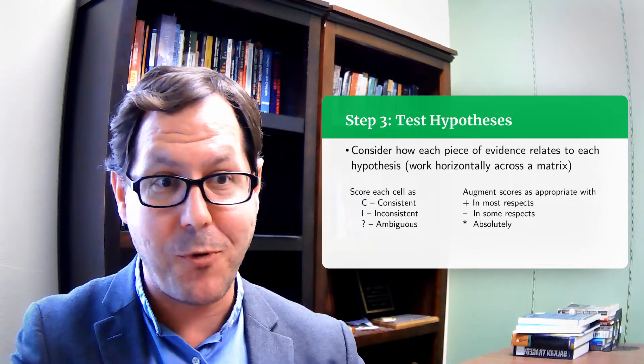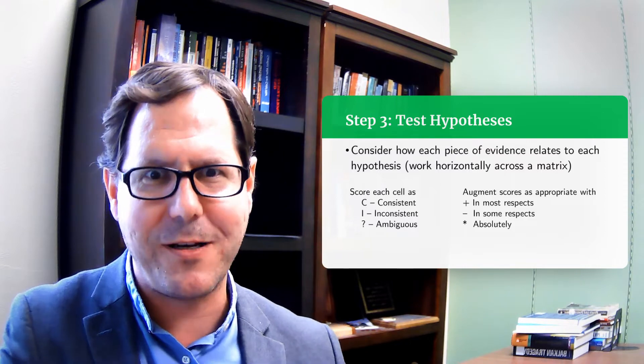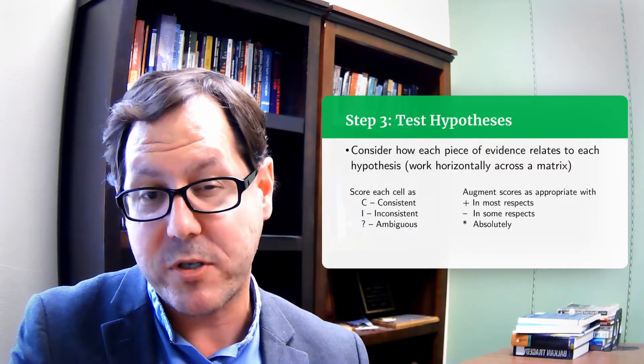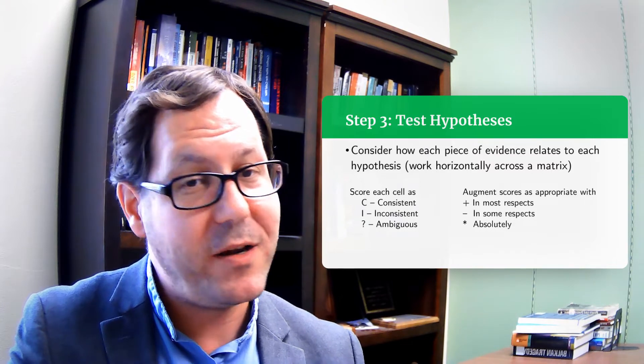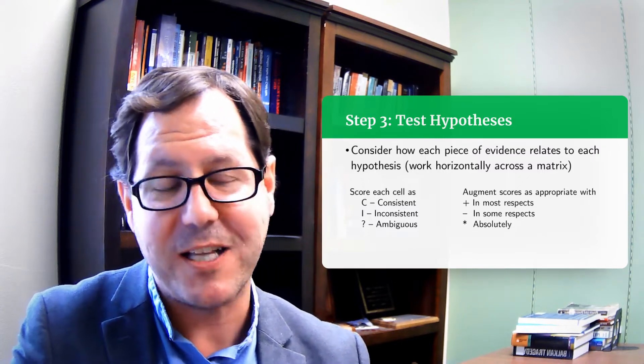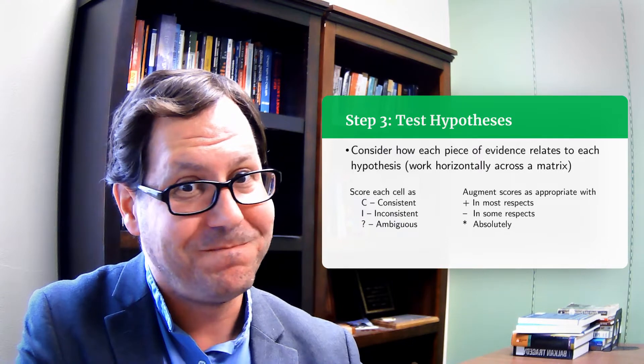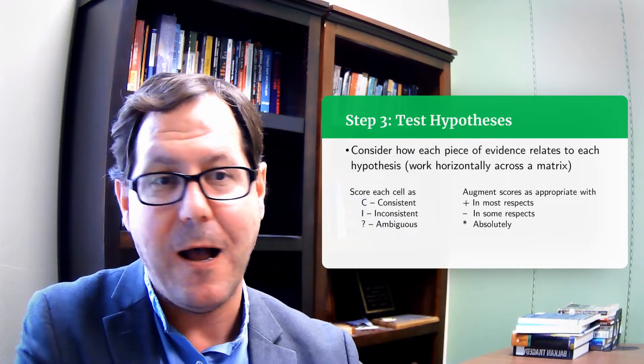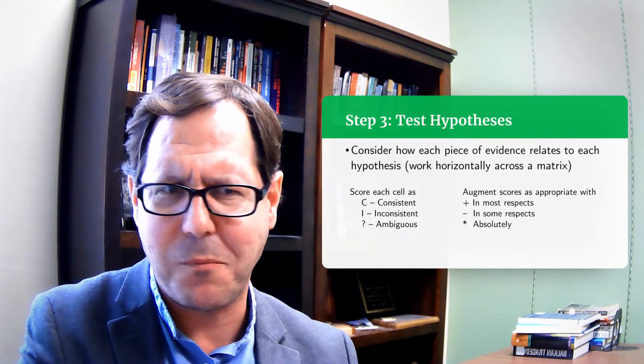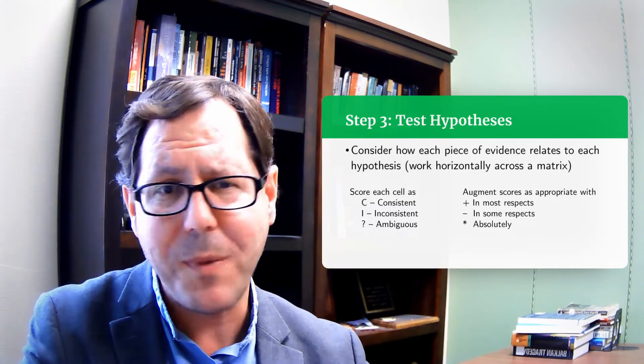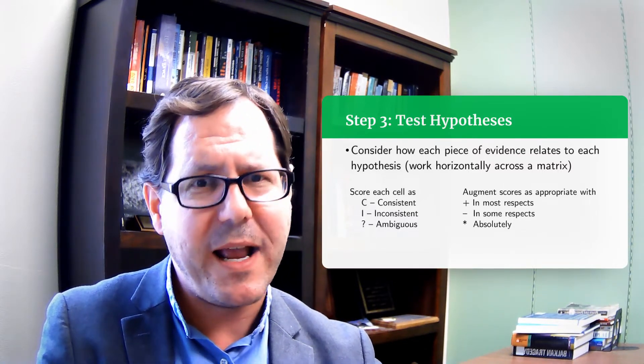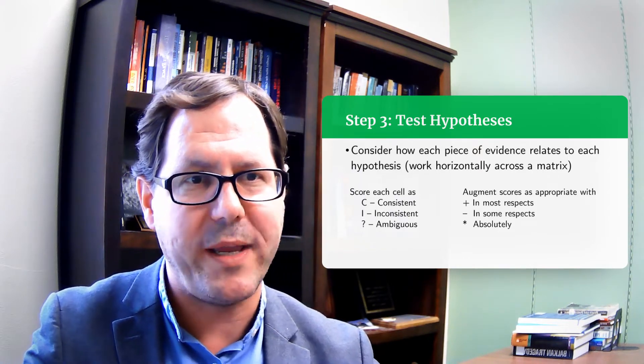It might be confirming, in which case maybe you want to put an asterisk next to it and say this is not just consistent, but this really seems to be pointing that this is strong evidence for this hypothesis. But what we're more interested in are the situations where the evidence is inconsistent, where you look at it and say, I really don't know how these two things can square. If this hypothesis was true, this piece of evidence doesn't make a lot of sense. And I'm having a really hard time coming up with a scenario that would generate this piece of information that I have. Maybe it's a slam dunk and we give it an asterisk. Maybe it's questionable and so we maybe augment it with a plus sign or a minus sign. Or maybe that piece of information is ambiguous. We're not quite sure yet what to make of it, how to use it, what it really tells us. And so we're going to step back and not use that to drive our analysis quite yet.